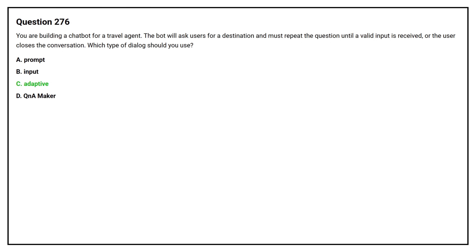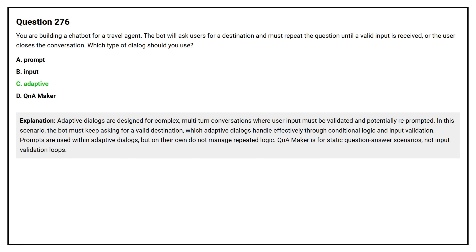The correct answer is Option C: Adaptive. Adaptive dialogues are designed for complex multi-turn conversations where user input must be validated and potentially re-prompted. In this scenario, the bot must keep asking for a valid destination, which adaptive dialogue handles effectively through conditional logic and input validation. Option A, prompt, is used within adaptive dialogue but on its own does not manage repeated logic. QnA Maker is for static question-answer scenarios, not input validation loops.